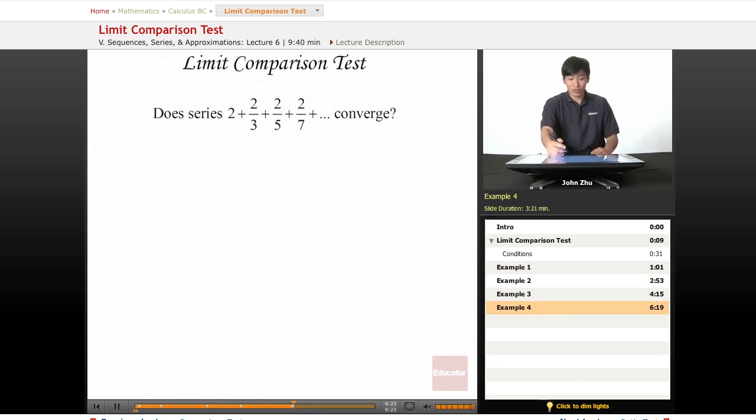Example here, we have a series 2 plus 2 over 3 plus 2 over 5 plus 2 over 7. This time they don't give us this generic term, so we'll go ahead to find it on our own.